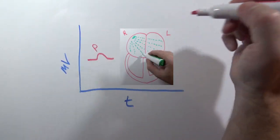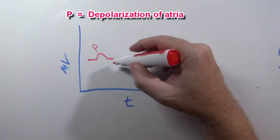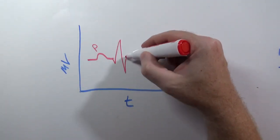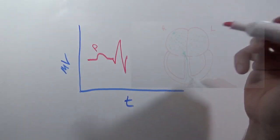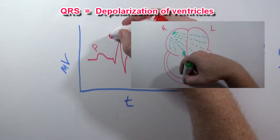Here we have the QRS complex, and the QRS complex represents depolarization of the ventricles.